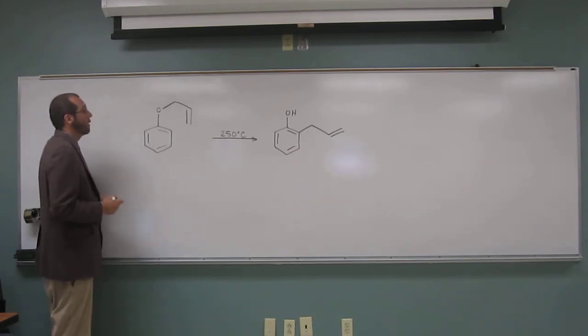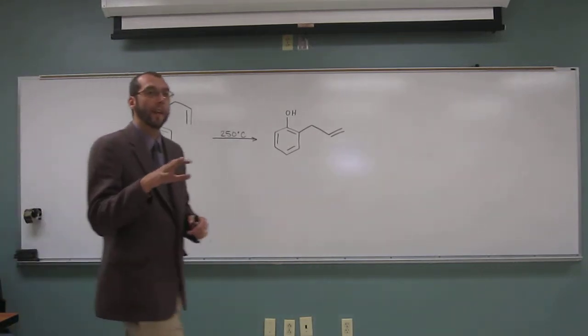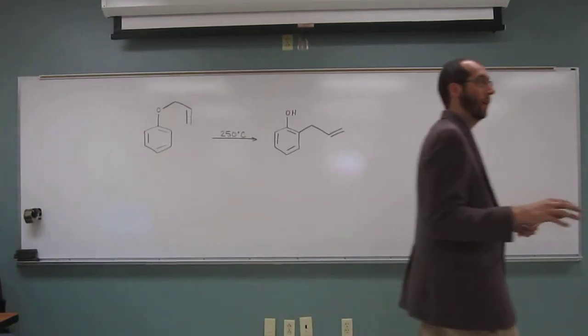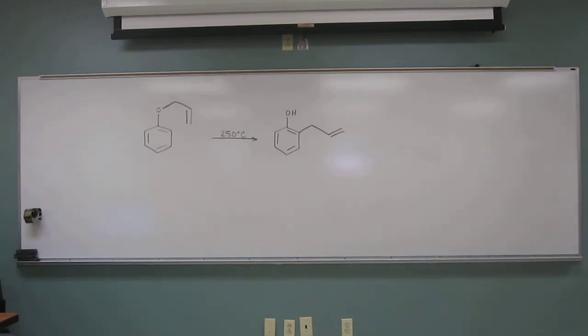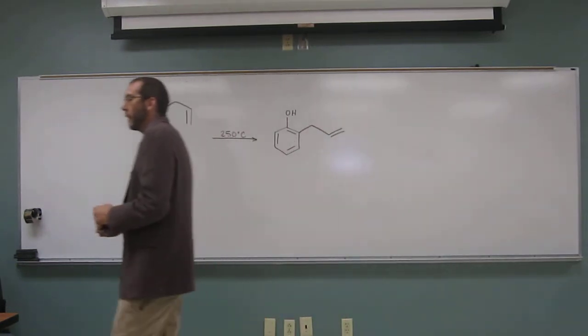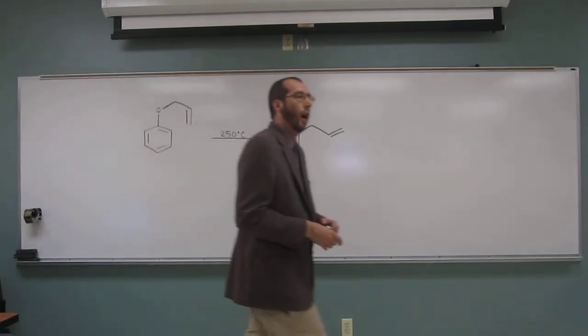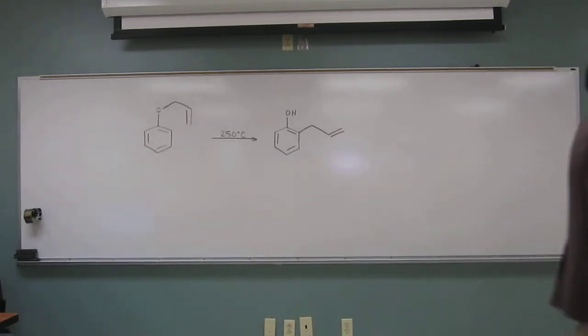So how does this happen? Remember there's that 6 electron electrocyclic rearrangement. So this is a pericyclic reaction. Remember just like when we were doing things like the Friedel-Crafts reaction or those types of electrophilic aromatic substitutions, in those ones the benzene ring or the aromatic ring became a nucleophile. Same thing happens in the Claisen rearrangement.